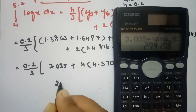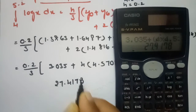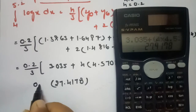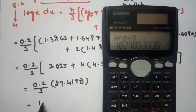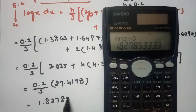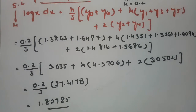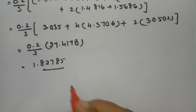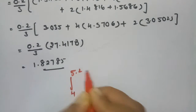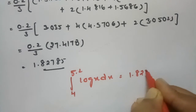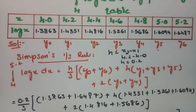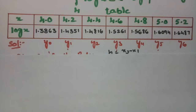Evaluating this gives 0.2/3 × the total value, and the final result is 1.82785. So the integral from 4 to 5.2 of log x dx equals 1.82785 according to Simpson's 1/3rd rule.